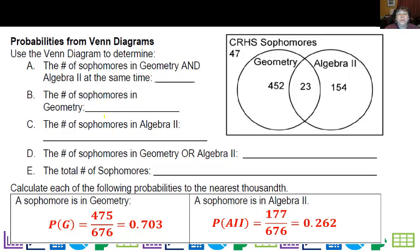Now you can do probabilities from the Venn diagrams as well using the actual frequencies. First of all, it helps to count the things. For example, the number of sophomores in Geometry and Algebra 2 at the same time, well that would just be the 23 right here because the 23 students standing in here are in the geometry circle and in the Algebra 2 circle at the same time. The number of sophomores in Geometry, you might be tempted to say it's the 452, but we also want to include these 23 because they're also in the geometry circle, so they're 475.